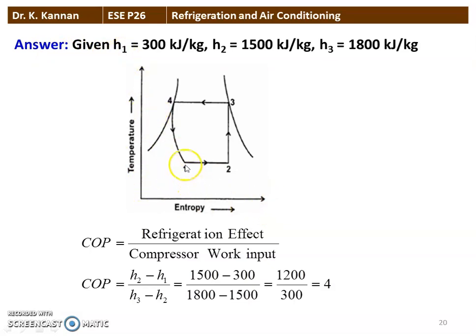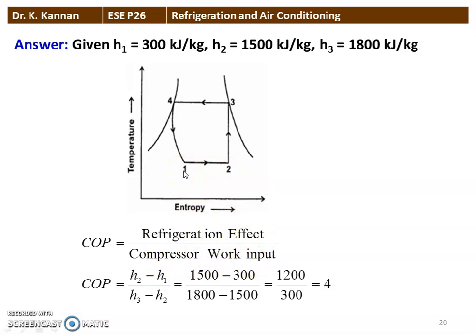The ideal vapor compression cycle is shown here. Process 1 to 2 is the evaporator (heat addition to the refrigerant), 2 to 3 is compression, 3 to 4 is condensation (heat removal), and 4 to 1 is expansion. H1 = 300 kJ/kg, H2 = 1500 kJ/kg, H3 = 1800 kJ/kg. COP = refrigeration effect / compressor work input = (H2 − H1) / (H3 − H2) = (1500 − 300) / (1800 − 1500) = 1200 / 300 = 4.